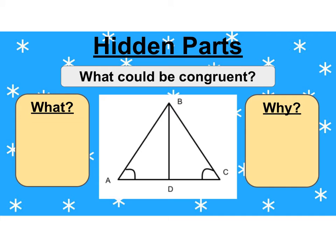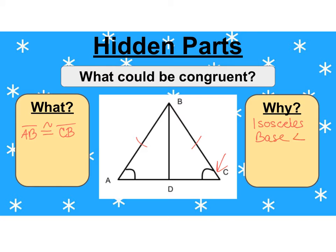Let's look at it backwards — same picture but with different information. Now I'm given that the angles are congruent, so therefore I know this must be an isosceles triangle. I can say that segment AB is congruent to segment CB. The reason here is the isosceles base angle converse. The converse flips it around: if the angles are congruent, then the sides are congruent.